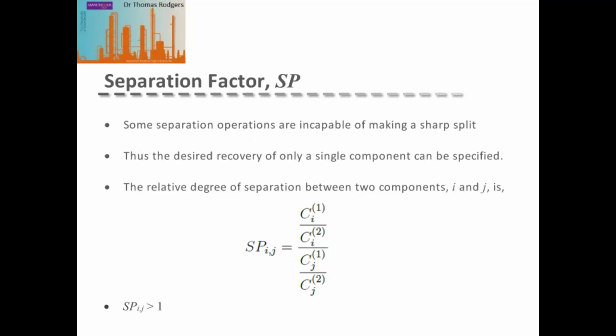Some separation operations are incapable of making a sharp split between the key components, so we can only affect a desired recovery of a single component. A separation process like distillation can make a sharp split and we can specify both our top and bottom products. Whereas separating by a membrane can't make a sharp split because in most membrane processes, all the materials pass through the membrane and we are only selecting unselected diffusion through the membrane.